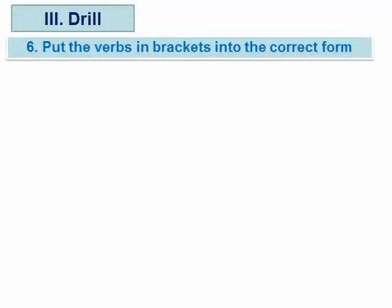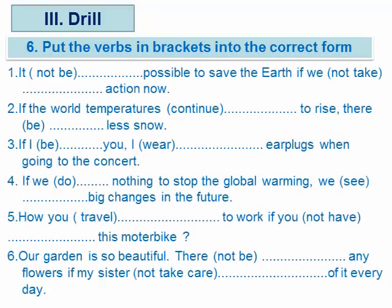Now, put the verb in the brackets into the correct form. There are six sentences, and among the six sentences, there are two kinds of conditional sentences — the first and the second. Be careful when you do it and choose the correct form — first or second conditional sentence. You have two minutes to finish.